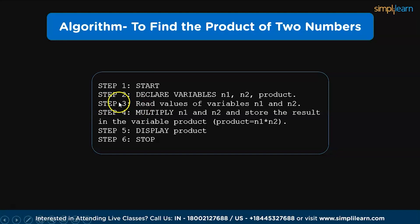Then in step 3, we are reading values of variables n1 and n2. That means taking values for n1 and n2. In step 4, multiply n1 and n2 and store the result in the variable product. Whatever we are multiplying of the values of n1 and n2 is multiplied and stored back in the product. Then in step 5, display product and step 6, stop.